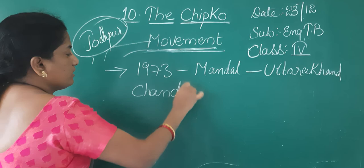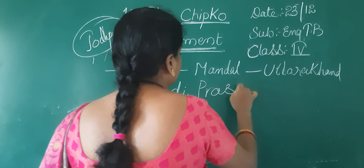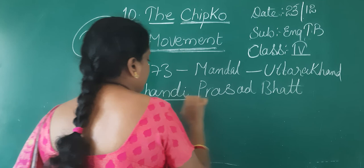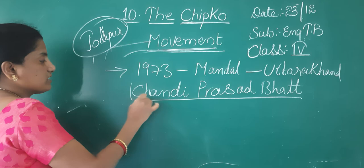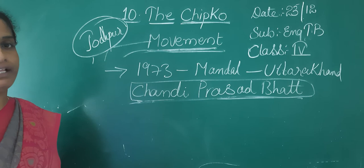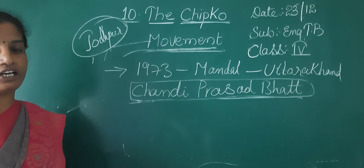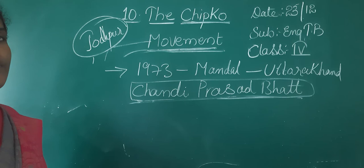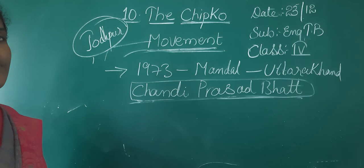See children, Chandi Prasad Bhatt is a lady activist who participated in the Chipko movement. She along with a group of villagers went to the forest and formed a circle around the trees to stop them from being cut. So children, what you have learned is that trees are very, very important for us and they fulfill our needs. So we have to save trees to save the environment.